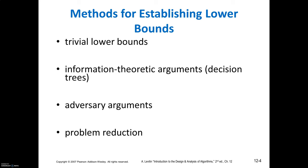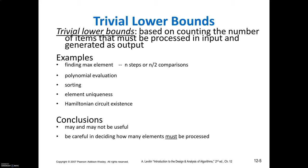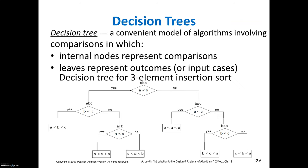How do you find the lower bound? There are four methods: the first is the trivial lower bound, the second is information-theoretic arguments, the third is adversary arguments, and the fourth is problem reduction. The trivial lower bound is based on counting the number of items that must be processed in the input in order to generate the output.